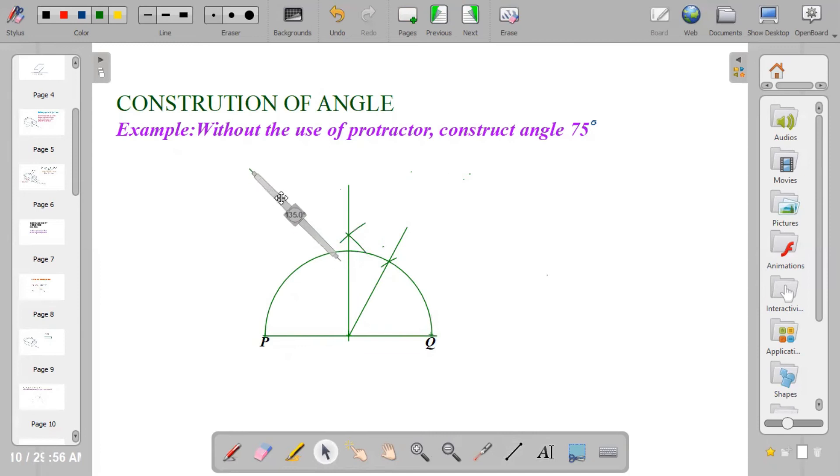Center at the first point, using any convenience radius, strike an arc. Take your compass to the second point, using the same radius, strike another arc to cut the first one.